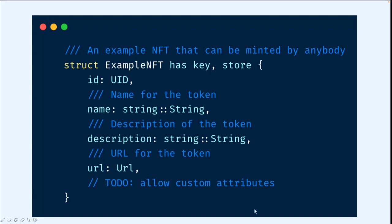Here is the structure for our example NFT. We have the ID, the name, description, and also URL. You can customize your own NFT structure by adding or deleting some fields. Just remember that objects in Swaymove must have the ID field and also the key ability.